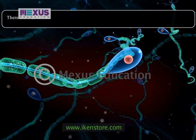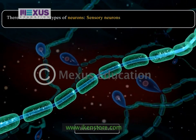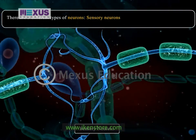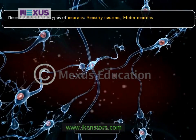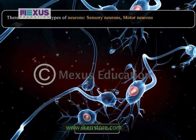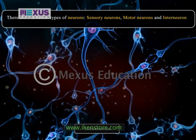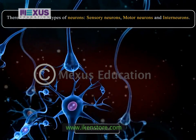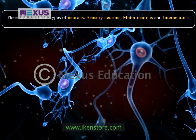There are three different types of neurons. The first is sensory neurons, which carry impulses from the sense organs to the central nervous system. The second type is motor neurons, which carry impulses from the CNS to muscles or glands of our body. The third type is interneurons, which connect various neurons within the brain and spinal cord and carry information between the motor and sensory neurons.